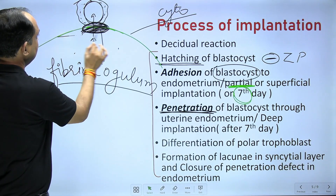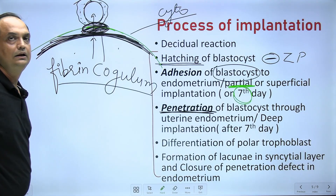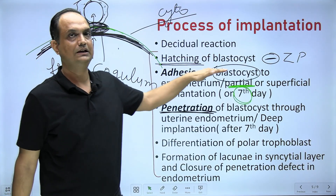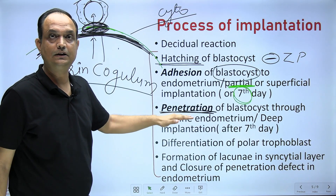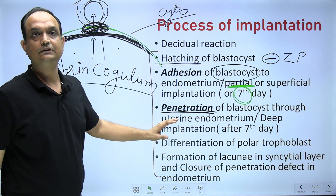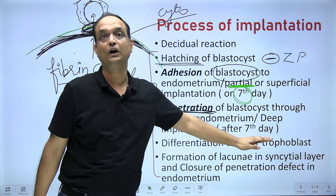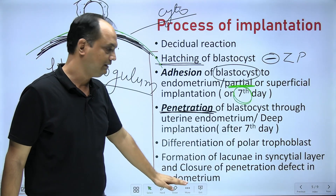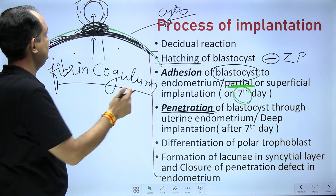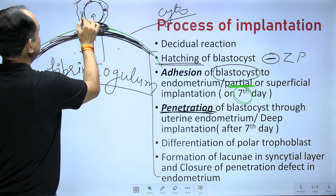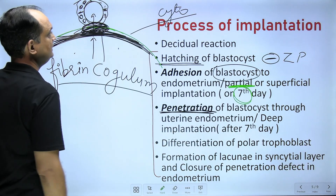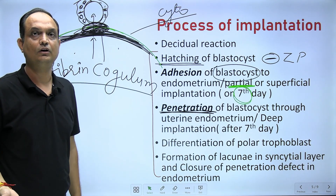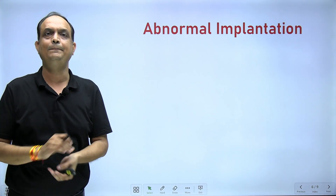To summarize the steps of implantation: first, hatching; second, addition of the blastocyst to the endometrium; third, deep implantation through penetration with differentiation at the polar trophoblast forming the syncytial layer; and lastly, the endometrial defect is healed. Additionally, there is formation of primary villi with lacunae in the syncytium, which are later filled with maternal blood — to be discussed further in embryology classes.